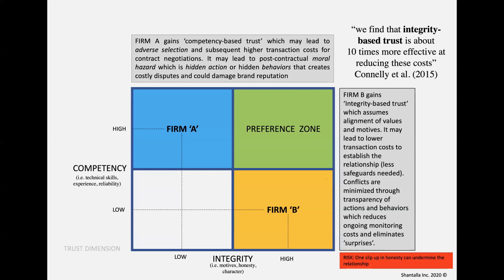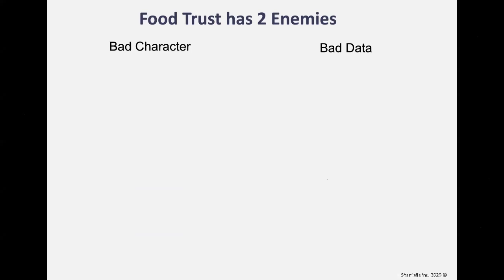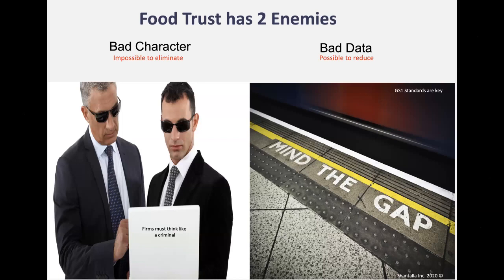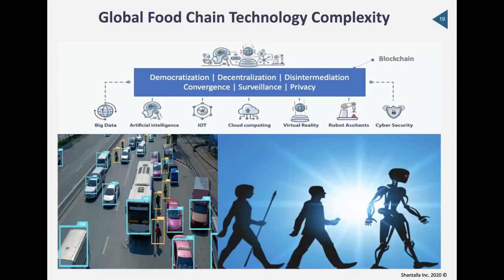Food trust has two enemies: bad character and bad data. It's impossible to eliminate bad character, but it is possible to reduce bad data. Firms must start thinking like a criminal to reduce it, and firms need to look at GS1 standards, which are absolutely critical to help solve the data problem.